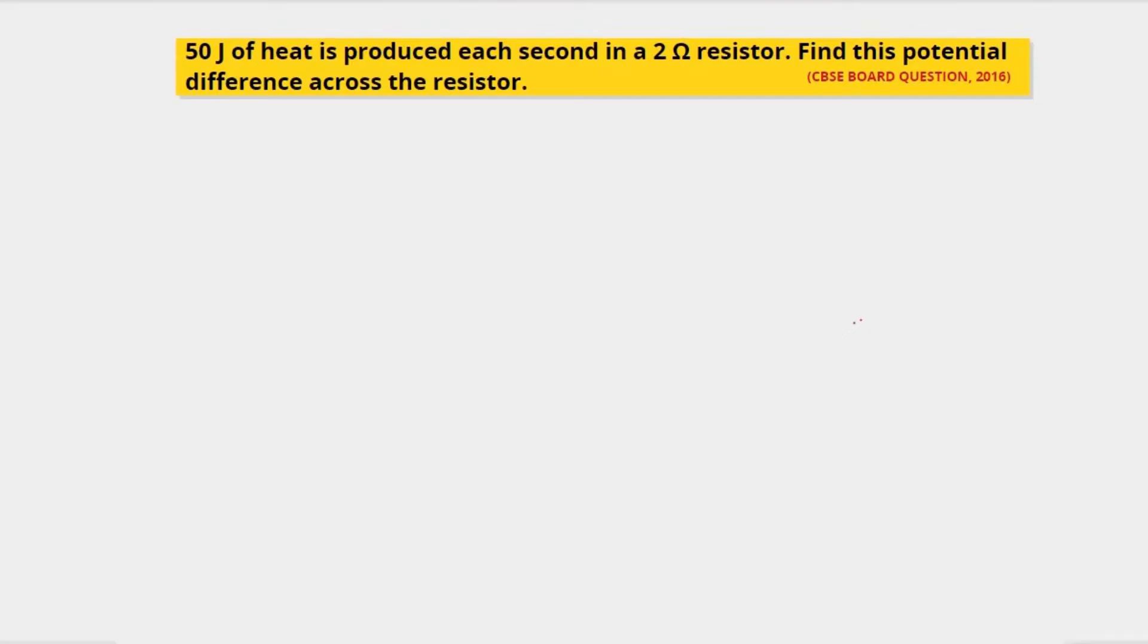Find this potential difference across the resistor. So here we have been given that there is a resistor and for every second 50 joules of heat is produced, and we have to find out the potential difference across this resistor.